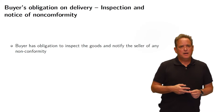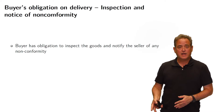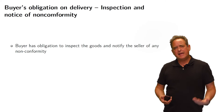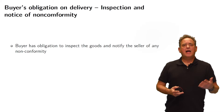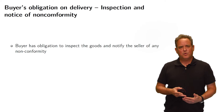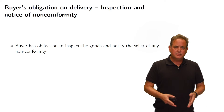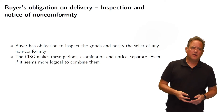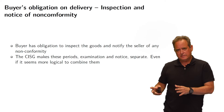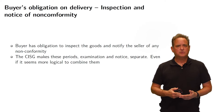When the seller delivers the goods — whether according to the contract terms or under the CISG — that delivery immediately triggers an obligation on the buyer. The buyer has an obligation to inspect the goods and then notify the seller of any non-conformity. The CISG separates these into two distinct time periods: the inspection period and the notice period, even though it might seem more logical to have just one.